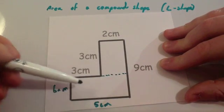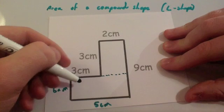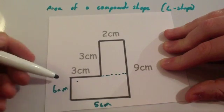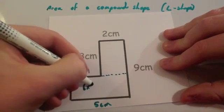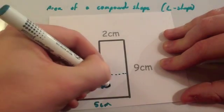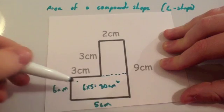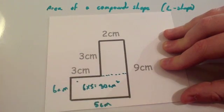Okay, to find the area of the rectangle, this one, the lower rectangle right on the bottom, this one. What we're going to do is we're going to multiply the height by the width. So we're going to do 6 times 5 which equals 30cm squared. So this one is 6 times 5 which is 30cm squared.